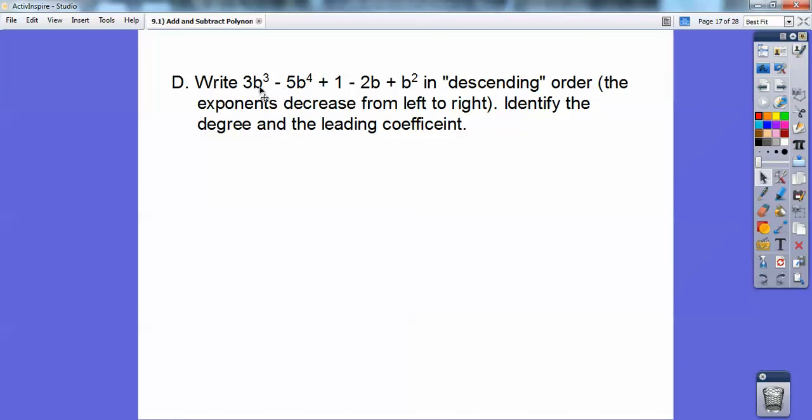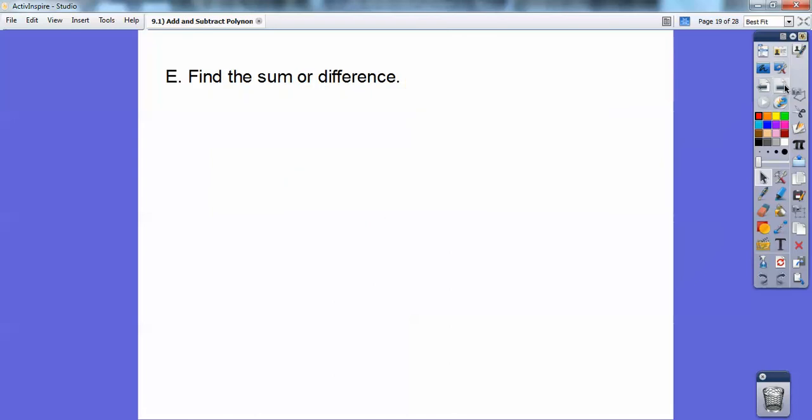And then there's no sign in front, so it's considered to be a plus. So plus 3b squared. Sorry, plus 3b cubed. Here's plus b squared minus 2b plus 1. So there it is in descending order. And the degree right there is 4, and the leading coefficient is that negative 5 right there. So it's not all that easy, but it's pretty close. This lesson is pretty easy.